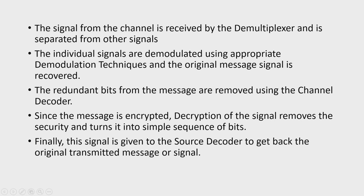The signal from the channel is received at the receiving end by a demultiplexer and is separated from other signals. The individual signal is then demodulated, which is a reverse process of modulation, and the original message signal is recovered. The demodulated wave is decoded and extra bits are removed from the message. Since the message is encrypted, it needs to be decrypted using algorithms, and finally it is given to the source decoder to get back the original transmitted signal.